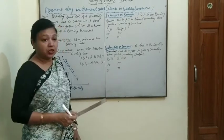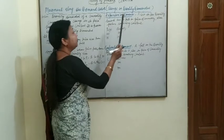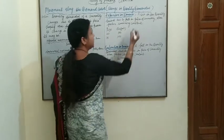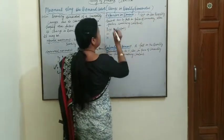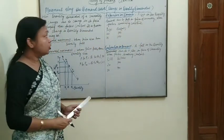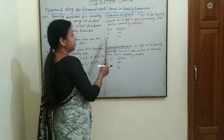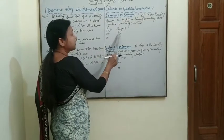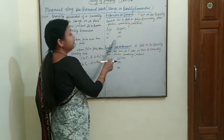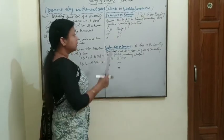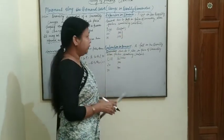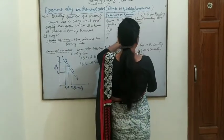Expansion in demand means a rise in quantity demanded due to a fall in price of a commodity, with other factors remaining constant. For example, if the price is 20 rupees, we purchase 100 units. But whenever the price is reduced to 15 rupees, we will take more units — demand extends from 100 to 150 units.